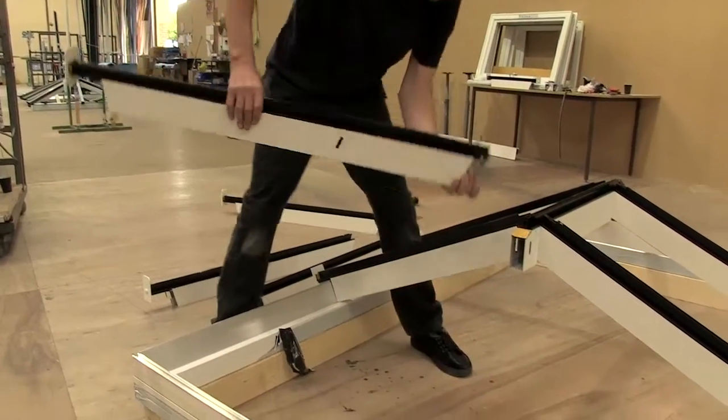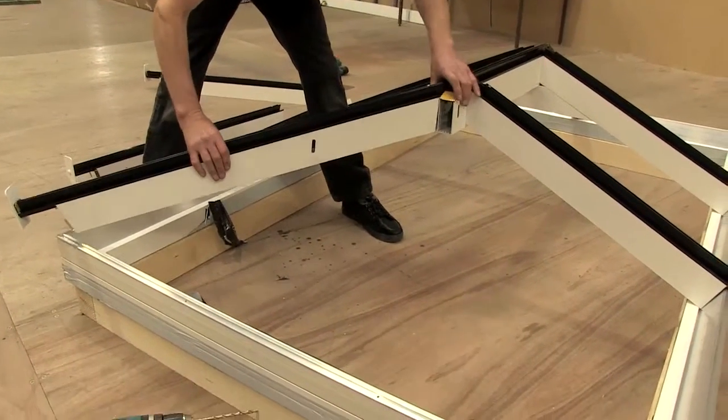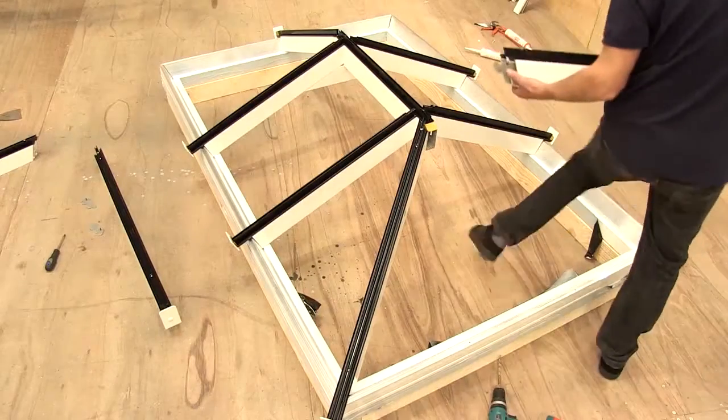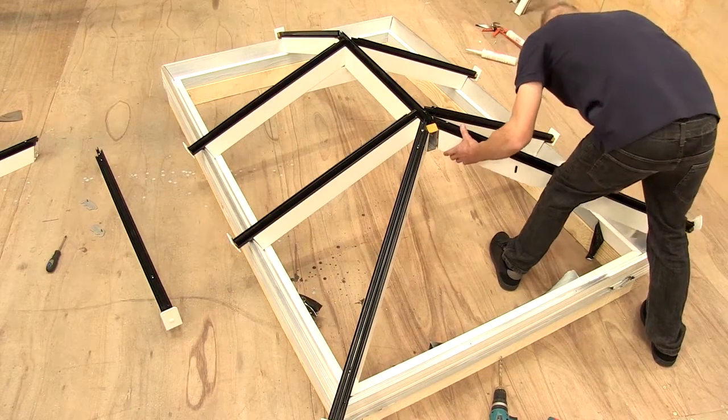Loosen off the top hip bracket screw and locate into the slot provided. Fix the next hip and secure screw at the top.